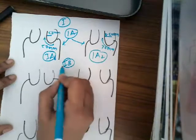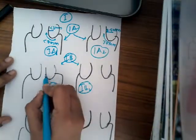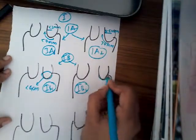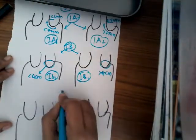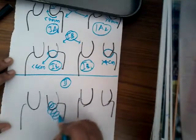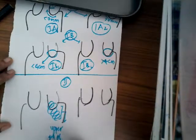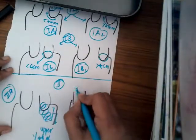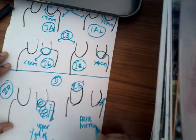Stage 1B is divided into 1B1 and 1B2. In stage 1B1, the lesion is less than 4 cm; in stage 1B2, the lesion is more than 4 cm. Stage 2 is when the lesion extends into the upper third of the vagina — that is stage 2A. Stage 2B is when the lesion extends into the parametrium.